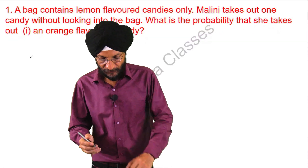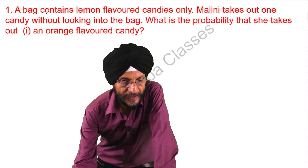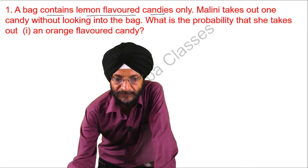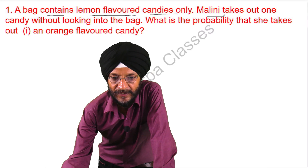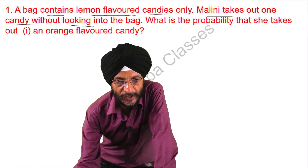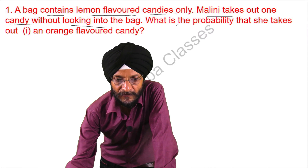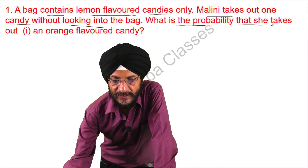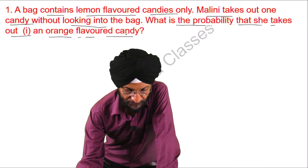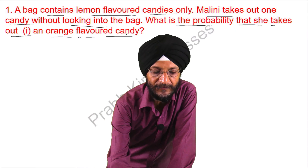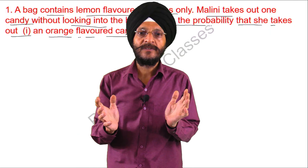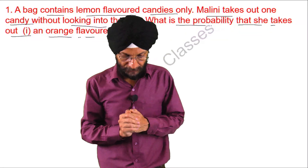The question before us is: a bag contains lemon flavored candies only. Melanie takes out one candy without looking into the bag. What is the probability that she takes out an orange flavored candy? Before proceeding further, we will understand this question with the help of an example.